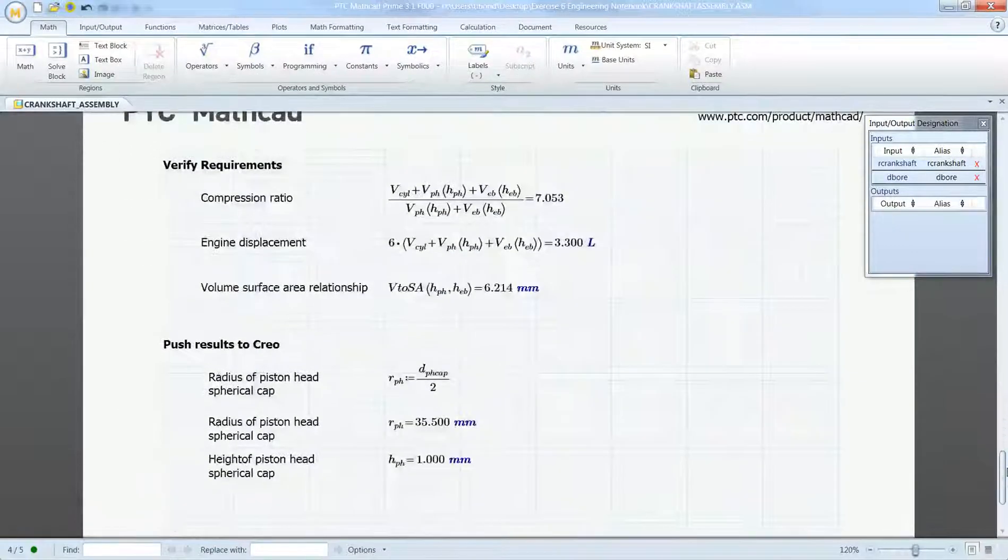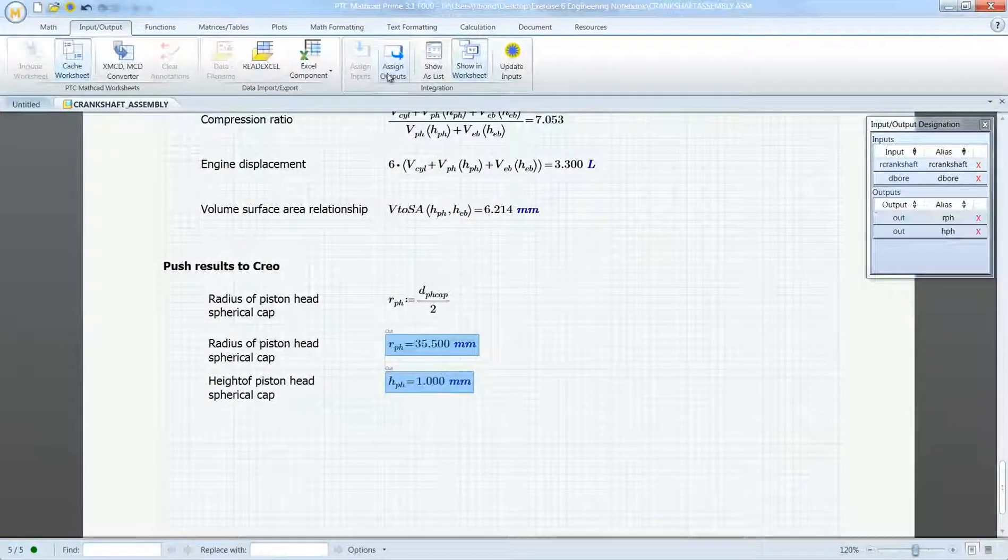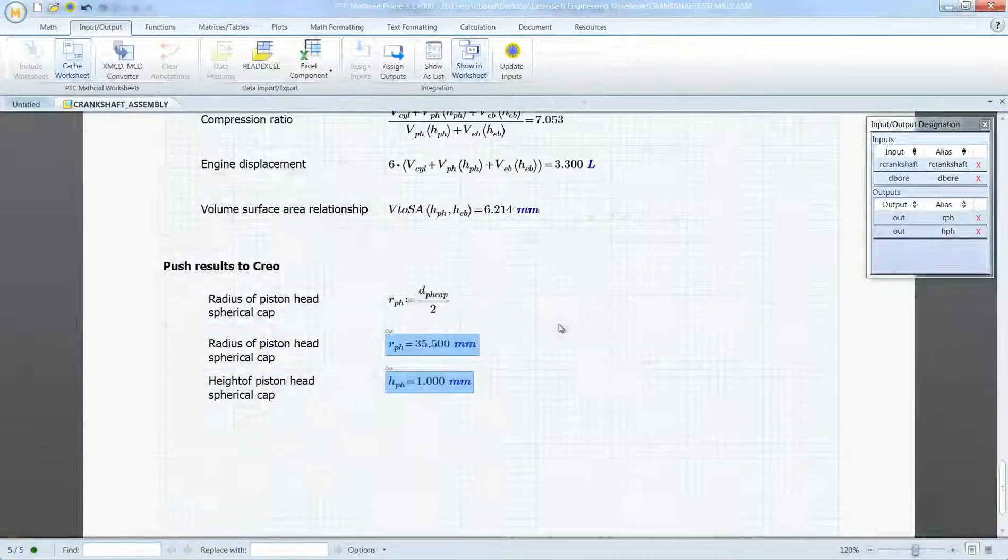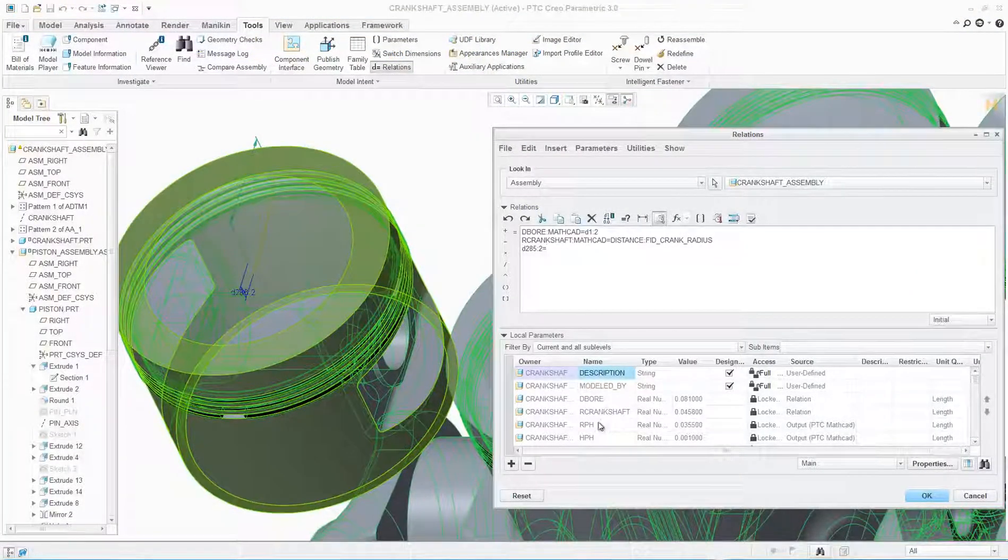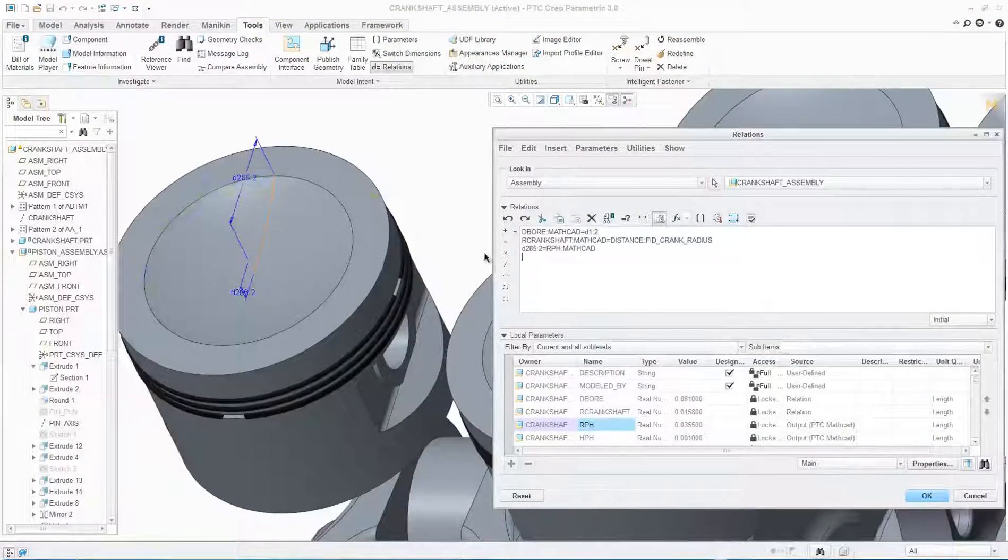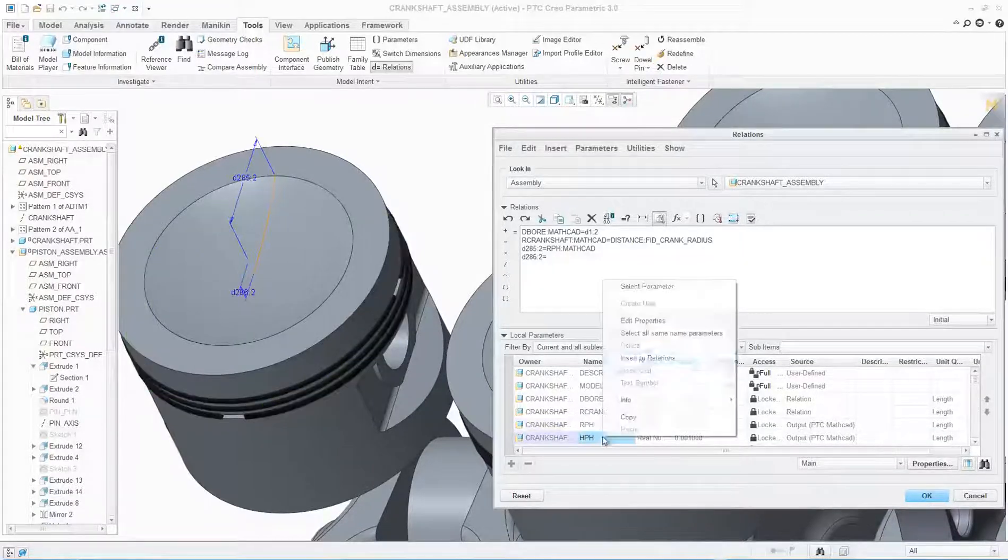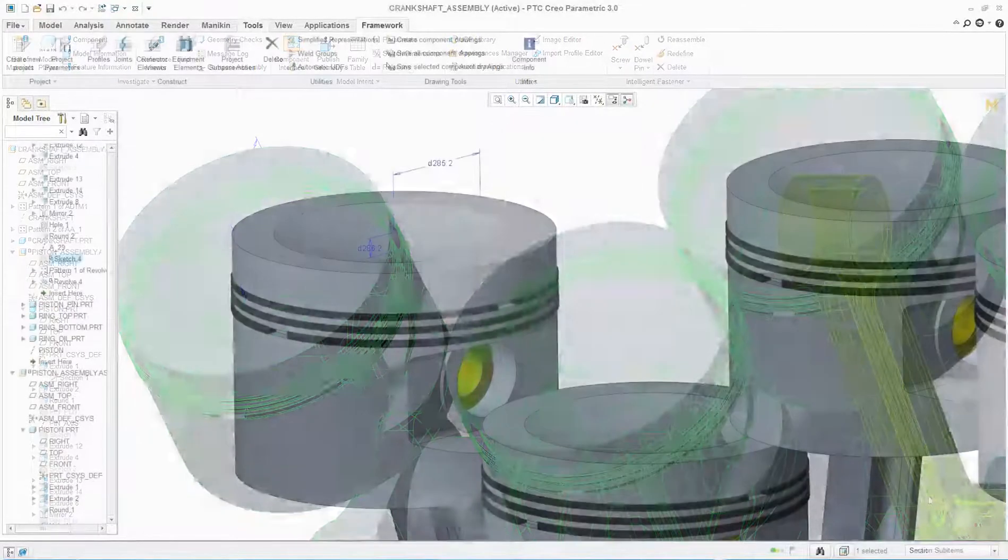At the same time, parameters from PTC Creo can be used to drive engineering calculations. This new ability to quickly and easily document engineering knowledge and design intent inside the PTC Creo model provides engineers with a powerful digital engineering notebook.